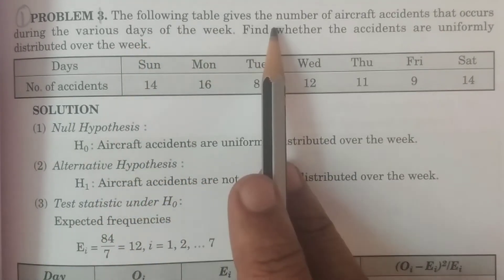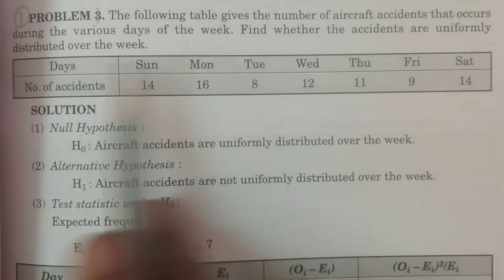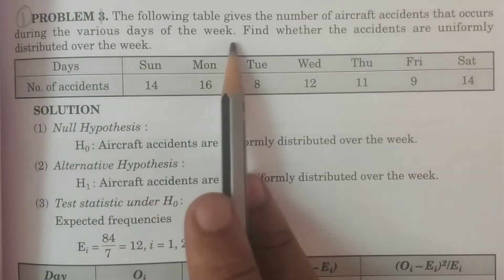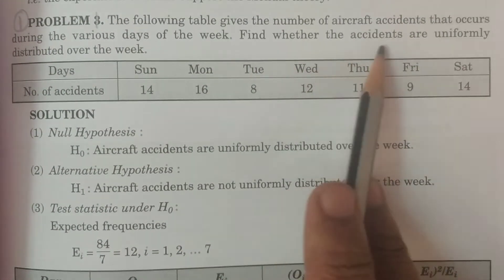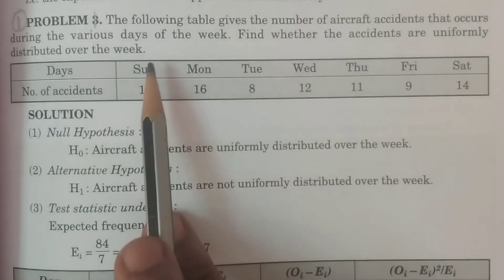The following table gives the number of aircraft accidents that occurs during the various days of the week. Find whether the accidents are uniformly distributed over the week. This is the question.